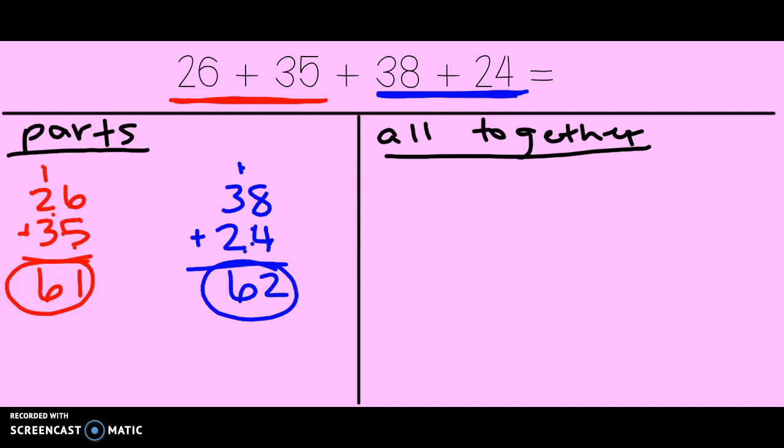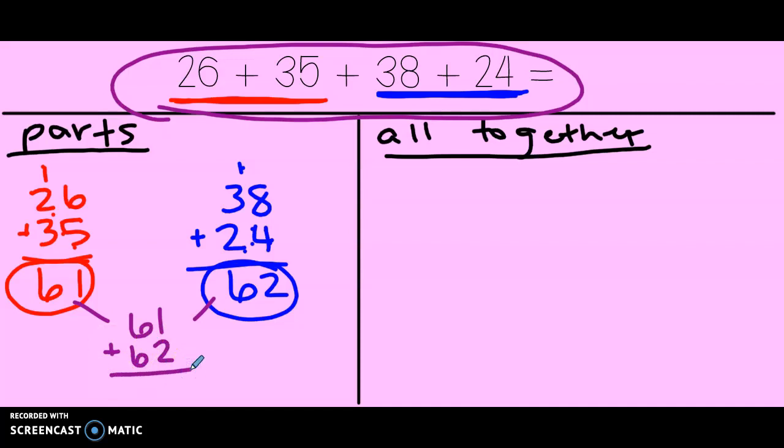But I need to find the total for all four numbers. So what do you think we should do, second grade? Let's add both of those up together to find the total. Here we go: 2 plus 1 more, that's 3, no new tens. And 6 plus 6, that's one of our doubles. What's 6 plus 6, second grade? 12. So our total is 123.